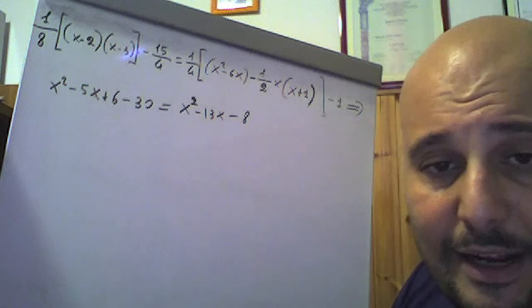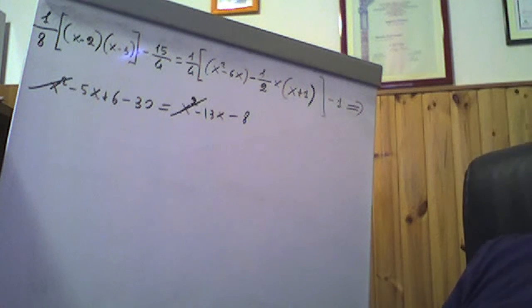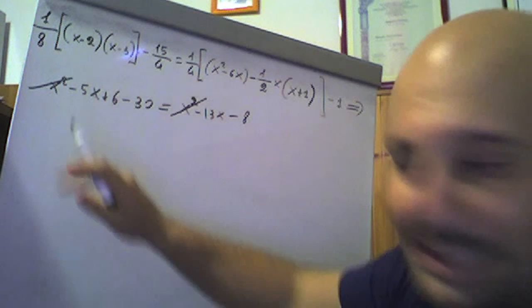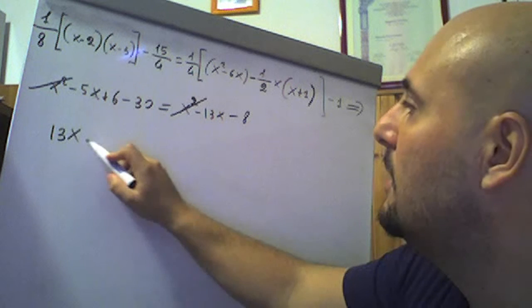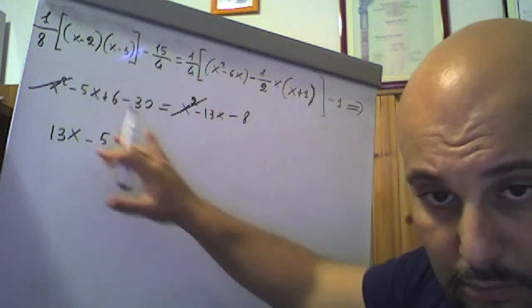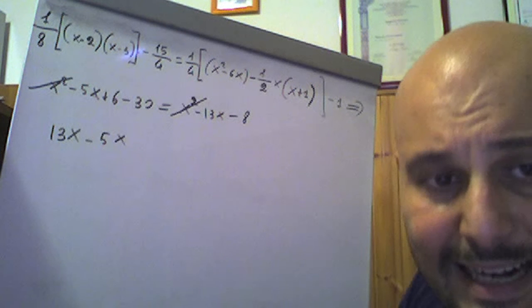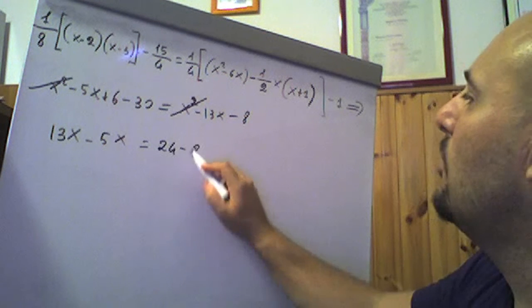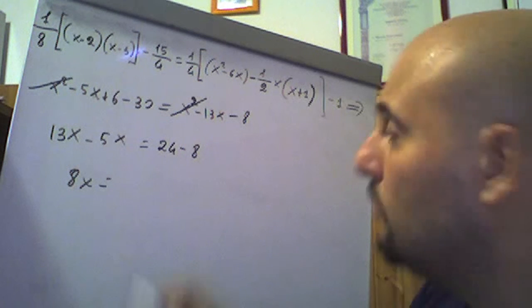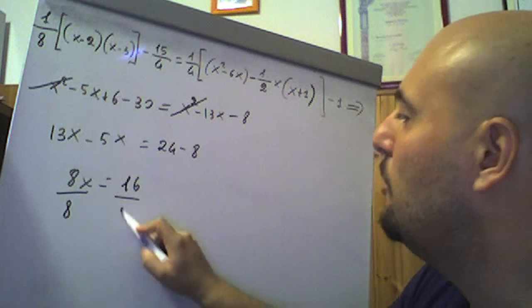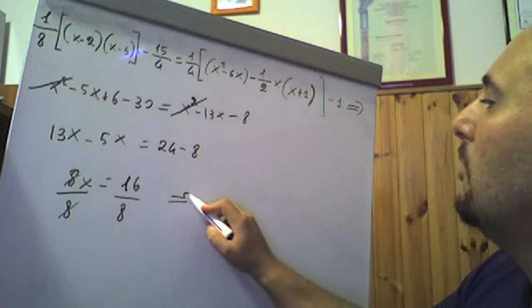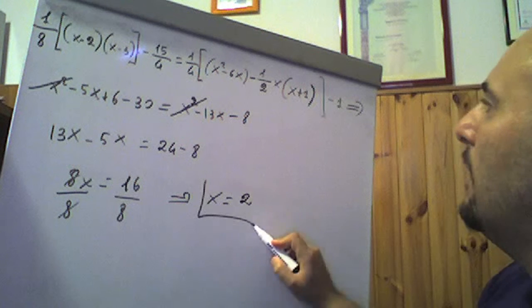Per la regola della cancellazione, x² e x² se ne vanno. Trasporto -13x da destra a sinistra scrivendo 13x, e -5x; 6-30 è -24, che trasportato a destra diventa +24; meno 8 già c'è. -13x più 5x è 8x uguale 24 meno 8 è 16. Applico il secondo principio di equivalenza dividendo ambo i membri per 8: x è uguale a 16 ottavi, cioè 2. x=2 è la soluzione dell'equazione.